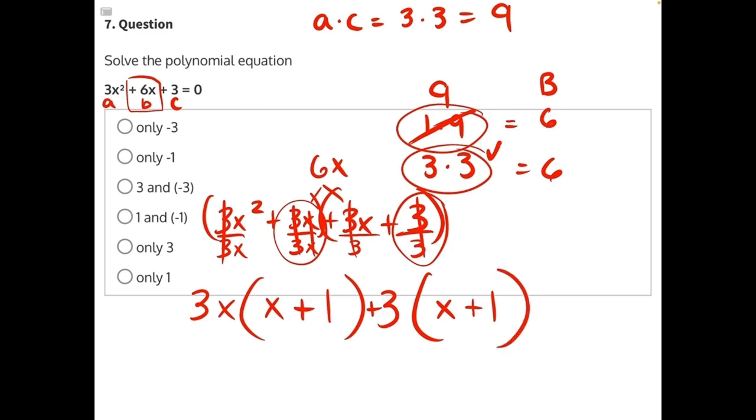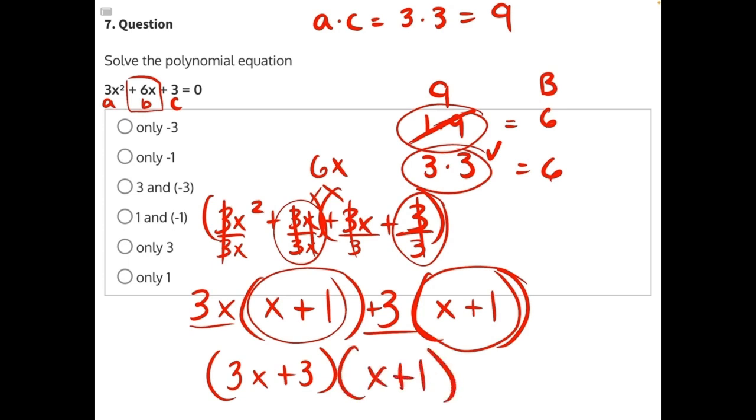So here is almost our factored polynomial. Now what we do is take the terms that we pulled out of each binomial and we put them together: 3x plus 3. And then our second binomial is going to be these identical binomials, so x plus 1. And now we have fully factored by grouping.